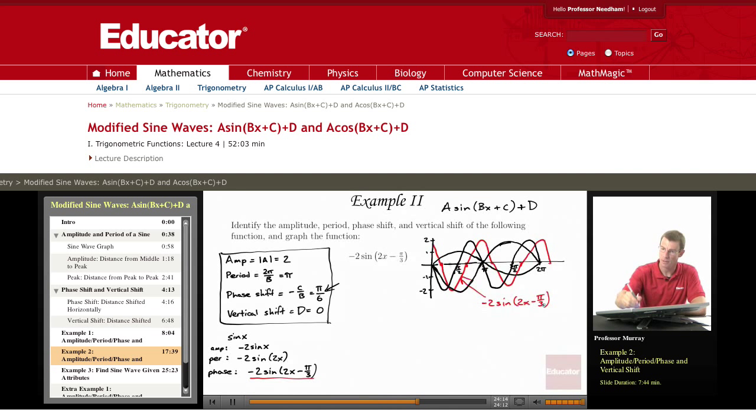So that red curve that I graphed there is negative 2 sine of 2x minus π over 3. The last step is to do the vertical shift, which is 0, so we don't have to move the graph at all, which means we're done. So this last graph is the one we want.